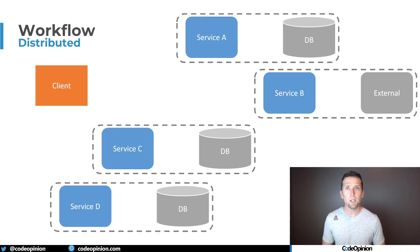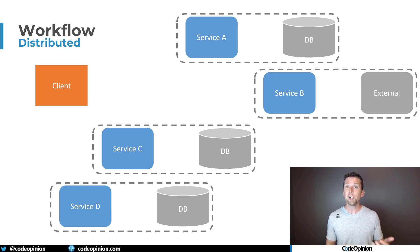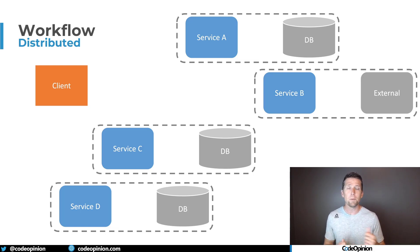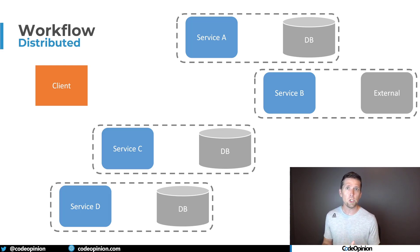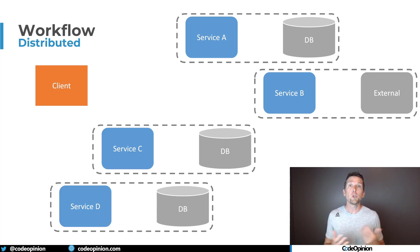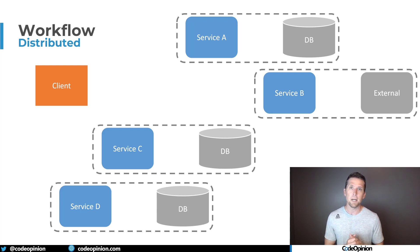So if you have a long-running business process or some workflow involving multiple different services, what's the issue with just doing direct RPC communication from service to service? This could be HTTP, gRPC, whatever the case may be. Well, there's latency issues, there's failure issues, but mainly it's just the tight coupling — and that's why we're trying to use event-driven architecture, to remove that tight coupling.